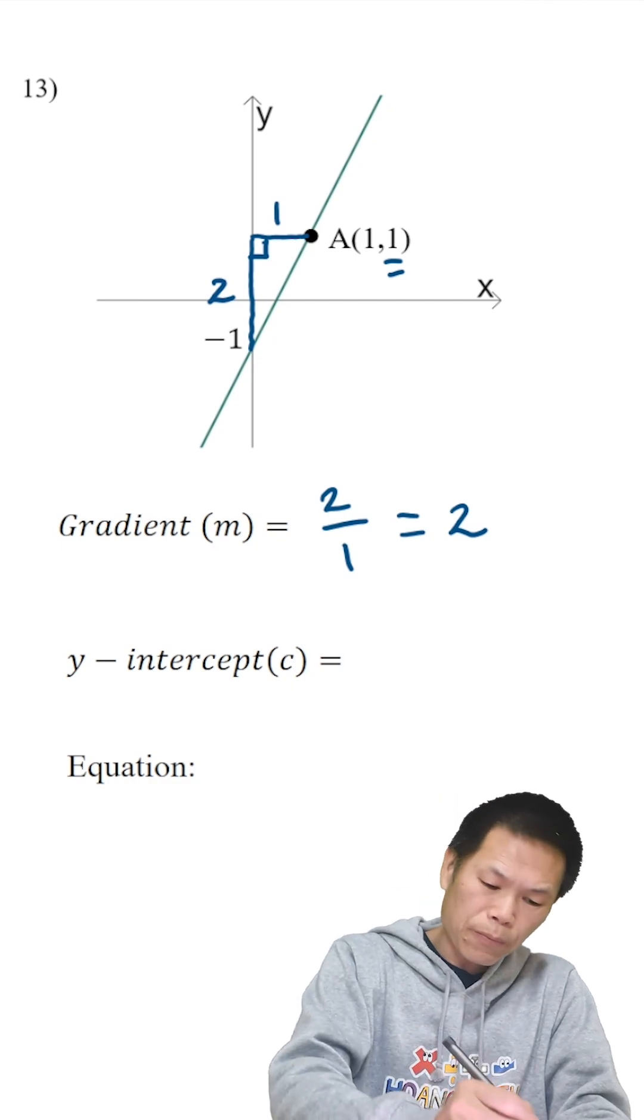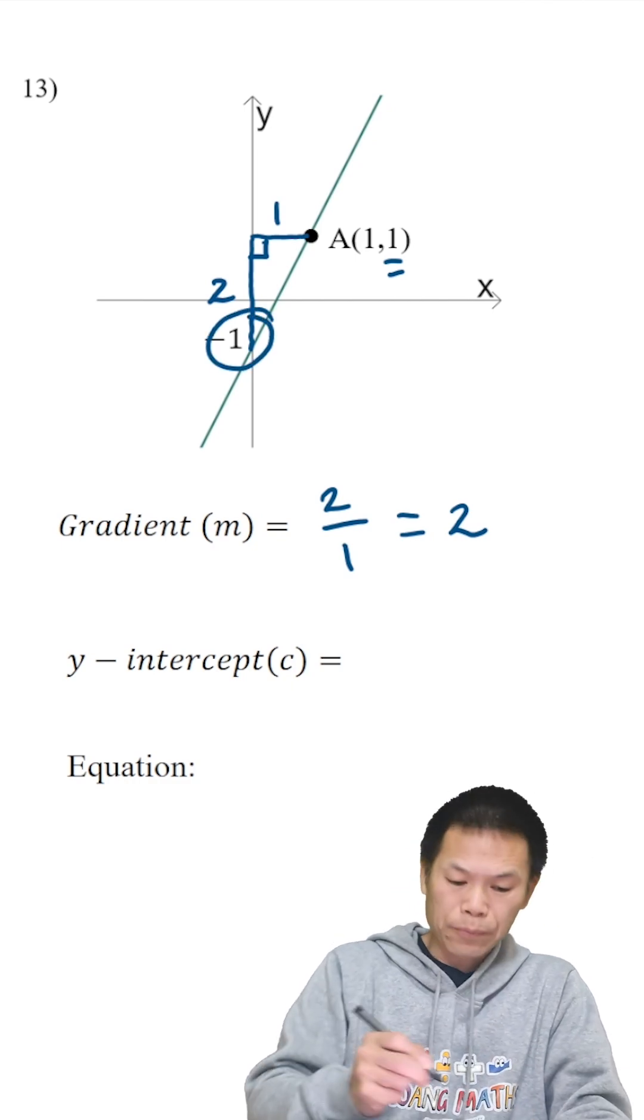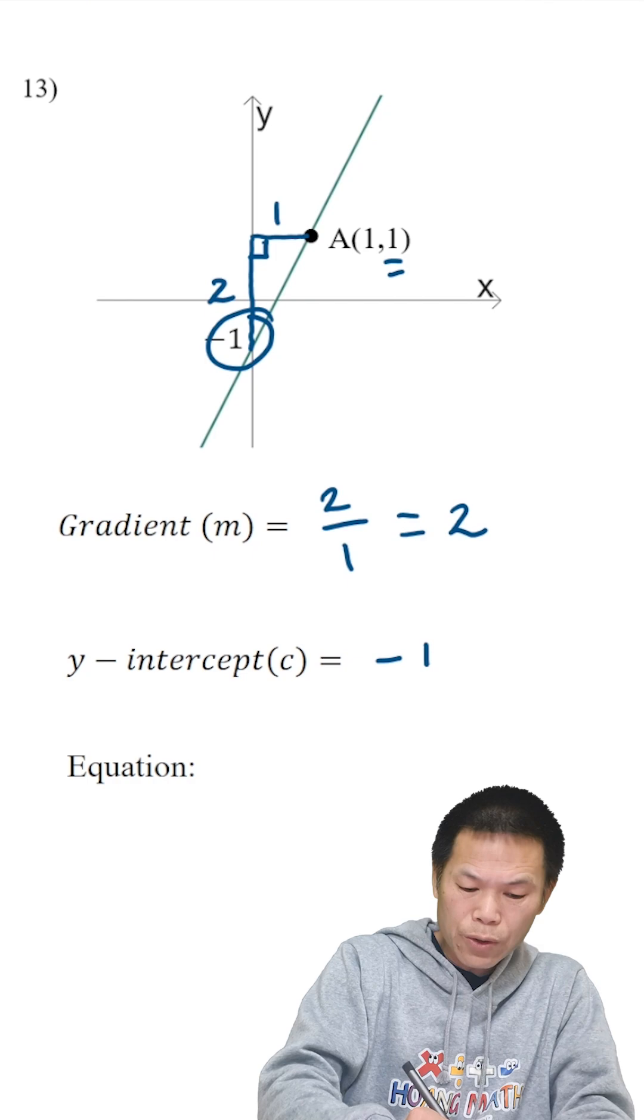And the y-intercept is here, negative 1. So c is negative 1.